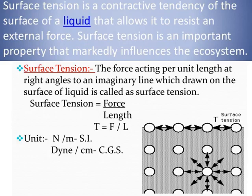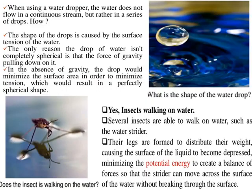We have the definition and the dimensions and formulations. Why can insects walk on water? Their legs are formed to distribute their weight, and the liquid surface is depressed down beneath them.